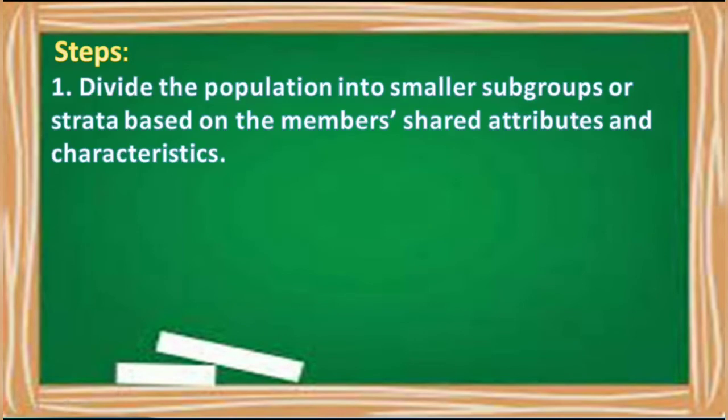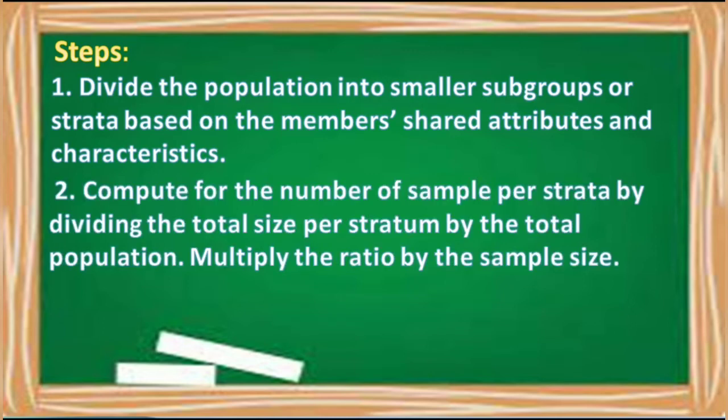Number one, divide the population into smaller subgroups or strata based on the member's shared attributes and characteristics. Number two, compute for the number of sample per strata by dividing the total size per stratum by the total population and multiply the ratio by the sample size.